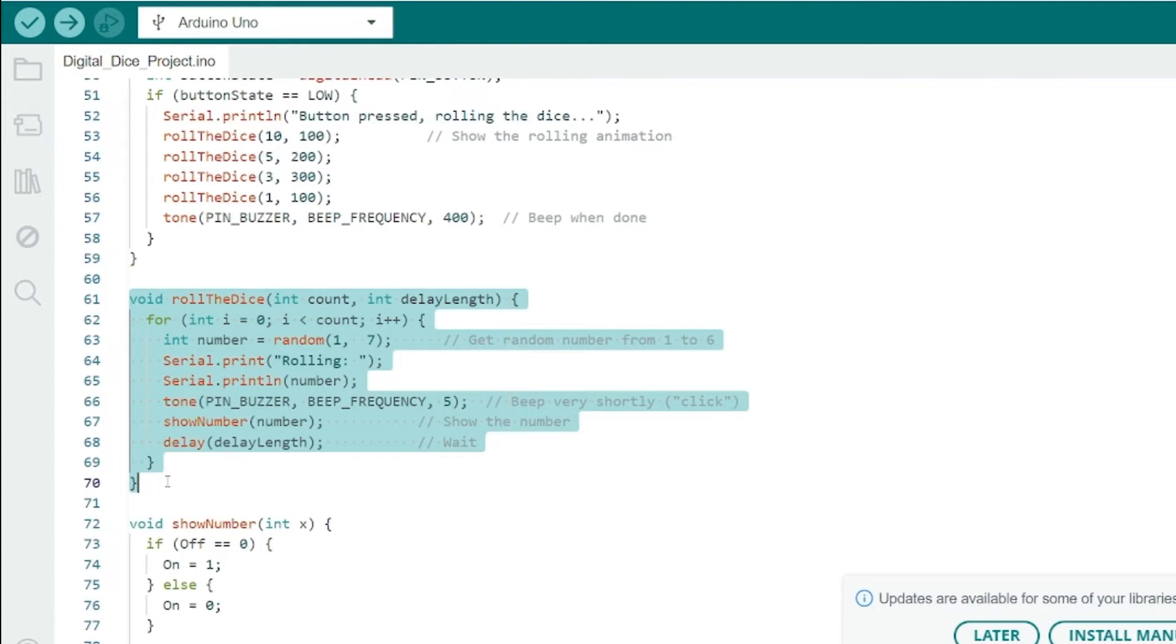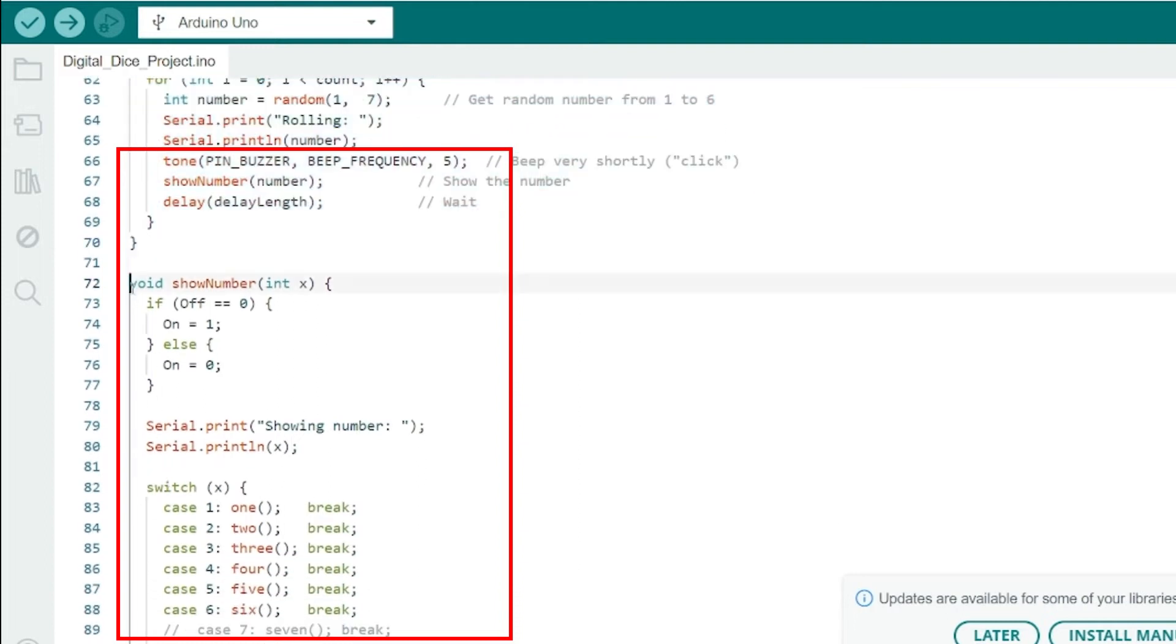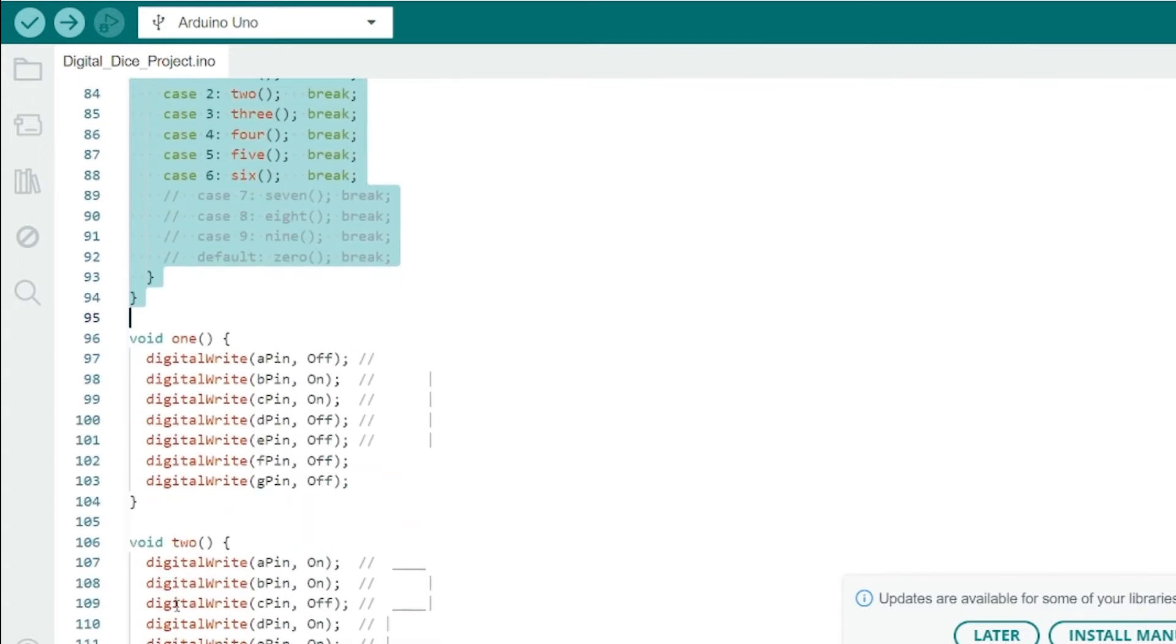The roll the dice function generates random numbers between 1 and 6 to simulate the rolling of the dice. It displays each number with a short beep and a delay to create the rolling effect.